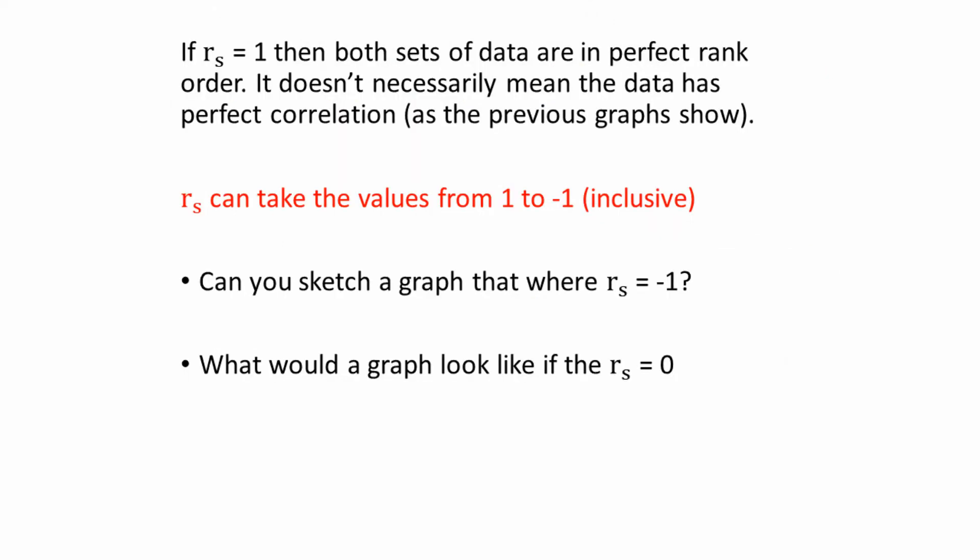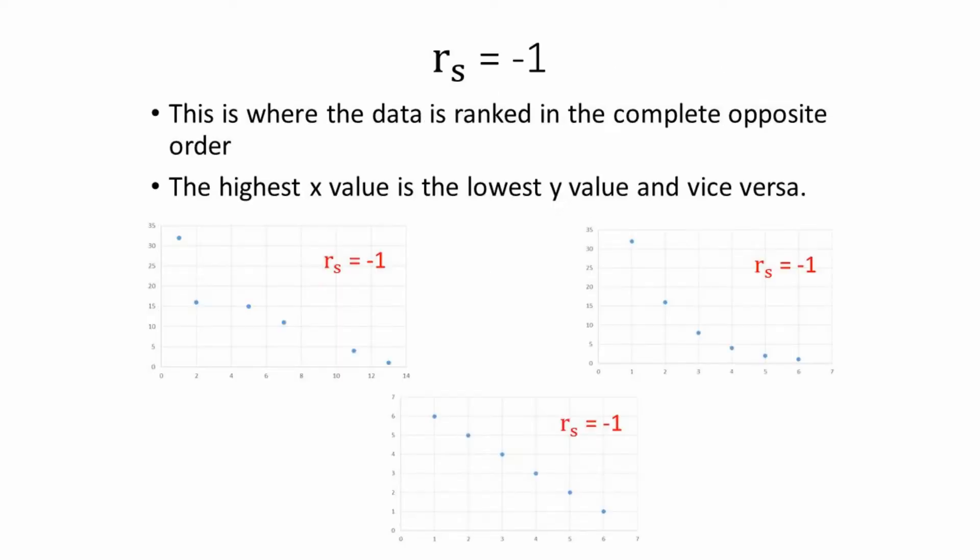It's possible that the Spearman's rank number could either be 1 or minus 1. The minus 1 will denote any correlation that is a negative or an inverse relationship, where one of the values increases and the other one will decrease. In a positive relationship, when one increases, the other one will also increase.